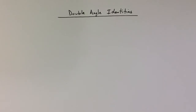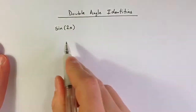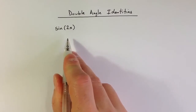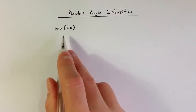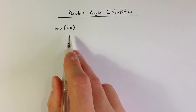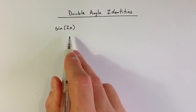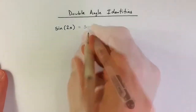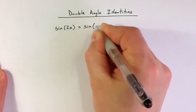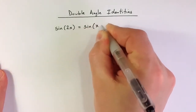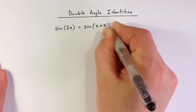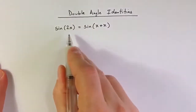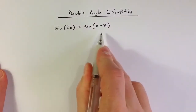Let's take a look at some double angle identities. Suppose we want to find an expression for sine of 2x in terms of sine of x and cosine of x. 2x is simply x plus x, and so I can express sine of 2x as sine of x plus x.